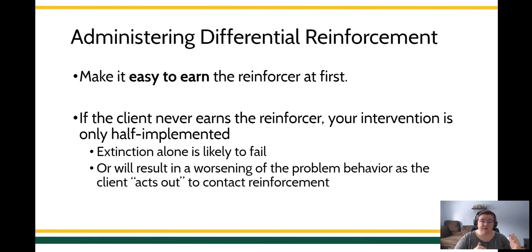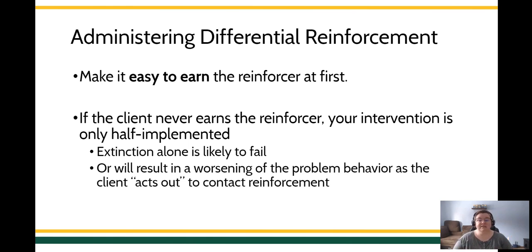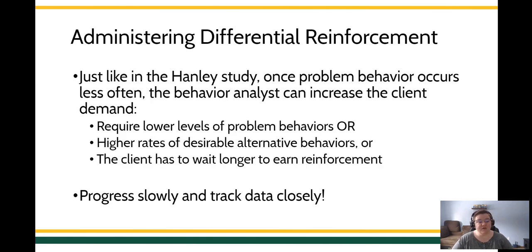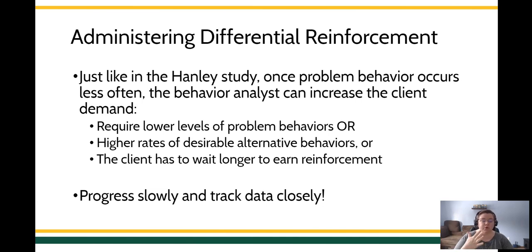If you're not using extinction for the undesirable behavior, or if it's harder to get the reinforcer for the desirable behavior than the undesirable behavior, it's not going to work — in fact, you could see the behavior get a little bit worse. You also want to make sure that as the problem behavior occurs less and the replacement behavior becomes more fluent, only then can you gradually make the replacement behavior a little more difficult. Progress slowly. Track your data. Go slow. Wait a while. Make sure they're earning lots of reinforcement for the alternative response.